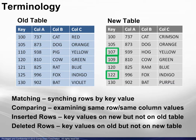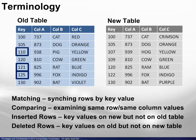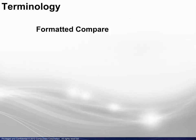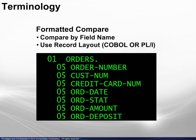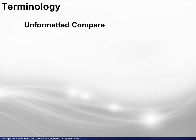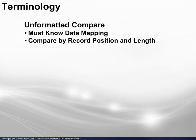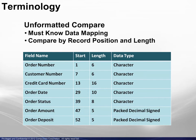Inserted rows are those with key values found on the new but not on the old table. Deleted rows are those with key values found on the old but not on the new table. A formatted compare is done by field name and uses a COBOL or PL1 record layout. An unformatted compare requires knowledge of data mapping, and the data is compared by position in the record and field length.